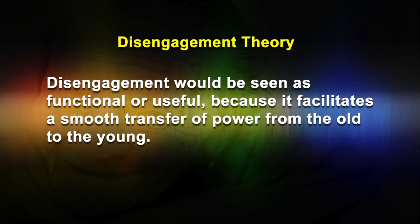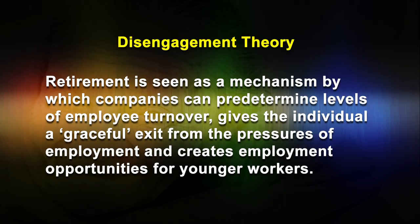Thus, disengagement would be seen as functional or useful because it facilitates a smooth transfer of power from the old to the young. From this perspective, retirement is seen as a mechanism by which companies can predetermine levels of employee turnover, gives the individual a graceful exit from the pressure of employment, and creates employment opportunities for younger workers. Hence, disengagement as illustrated by retirement is a mechanism for ensuring equilibrium within society and the transition of social power across generations.